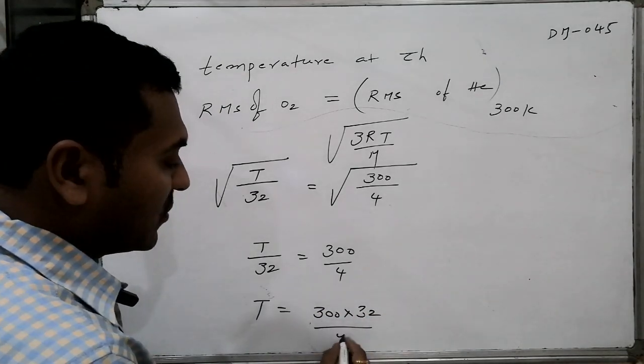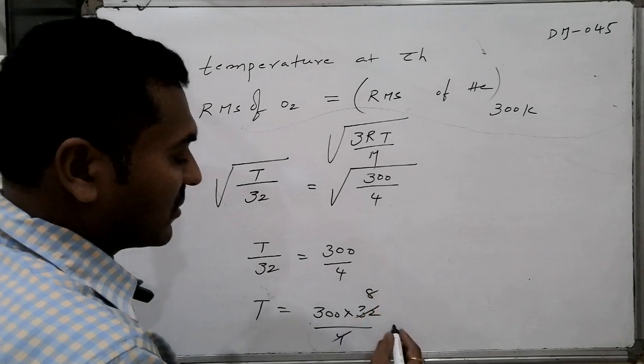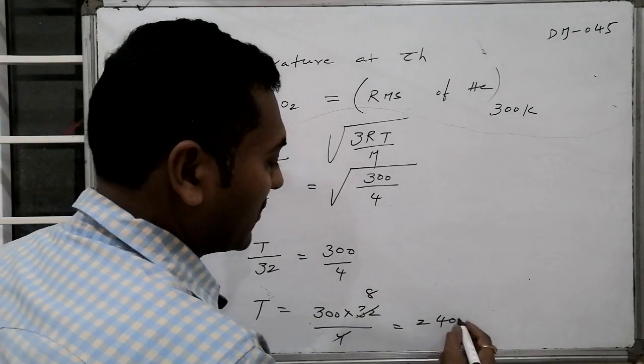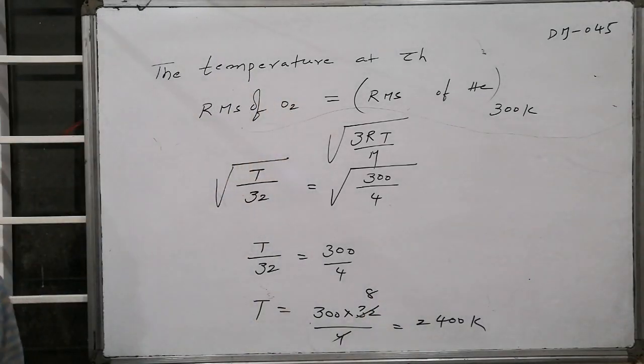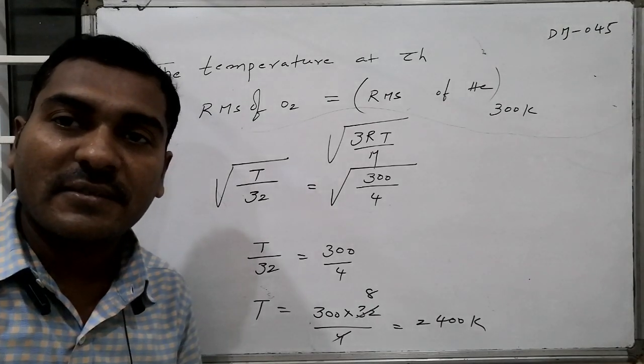Divided by 4. 4 ones 4, 8s, that is 2400 Kelvin. The temperature becomes 2400 Kelvin.